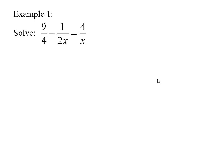Let's work an example. We want to solve the equation 9/4 minus 1/(2x) equals 4/x. The denominators do not need to be factored. The restriction on x is just that x cannot be zero. The least common denominator between 4, 2x, and x is 4x.